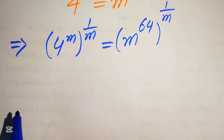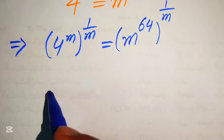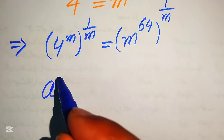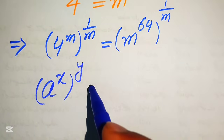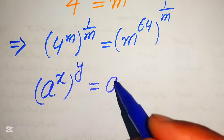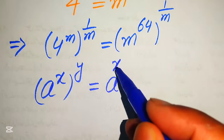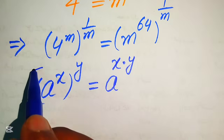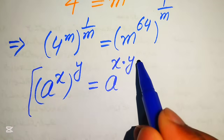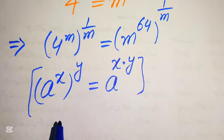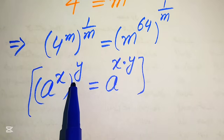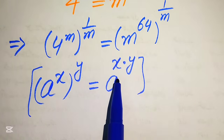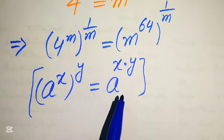Now we apply the exponent law: if we have a to the power of x, all to the power of y, it equals a to the power of x multiplied by y. This means that nested exponents are multiplied by each other.